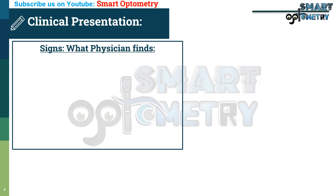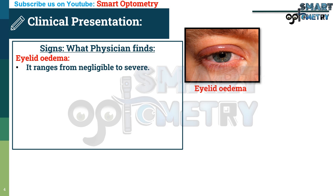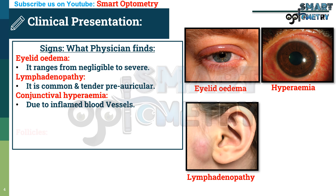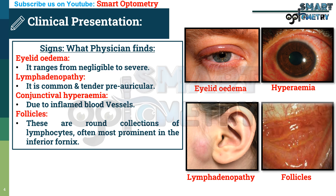Signs — what the physician finds. Eyelid edema, which ranges from negligible to severe. Lymphadenopathy, which is common and tender preauricular. Conjunctival hyperemia, due to inflamed blood vessels. Follicles, which are round collections of lymphocytes, often most prominent in the inferior fornix.